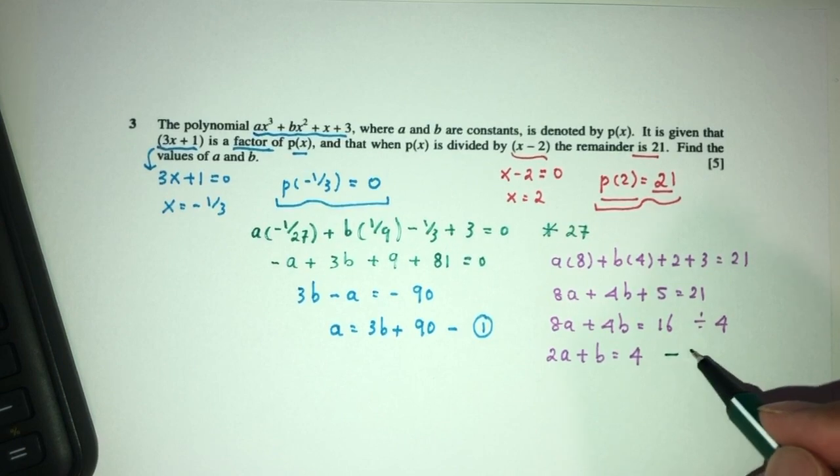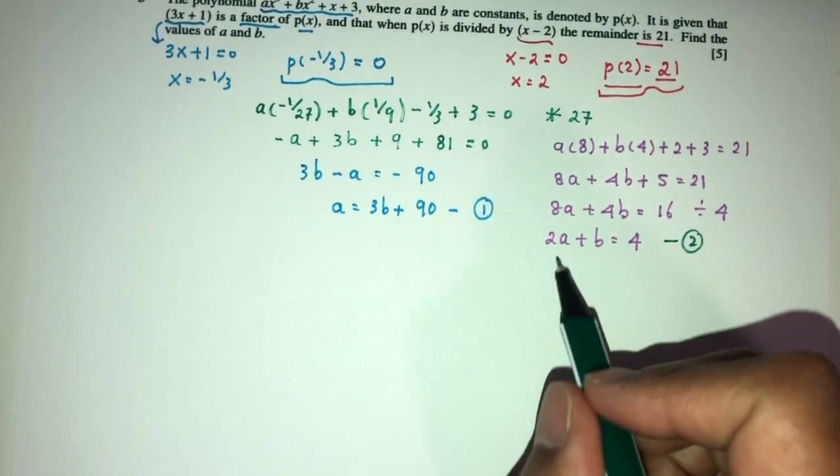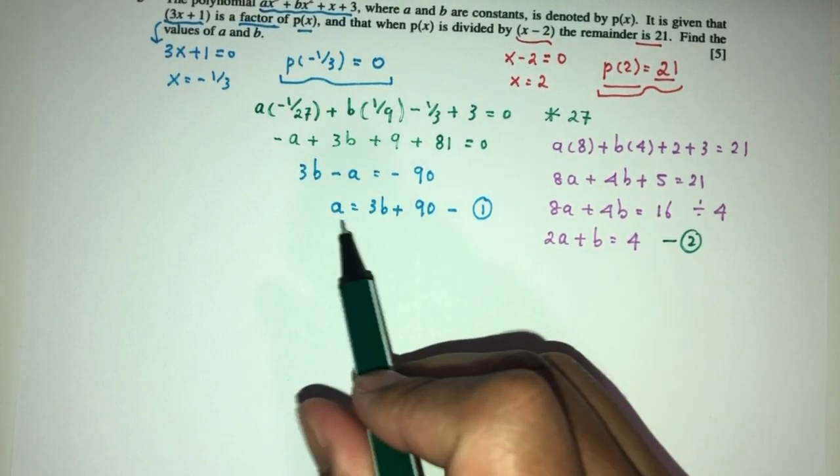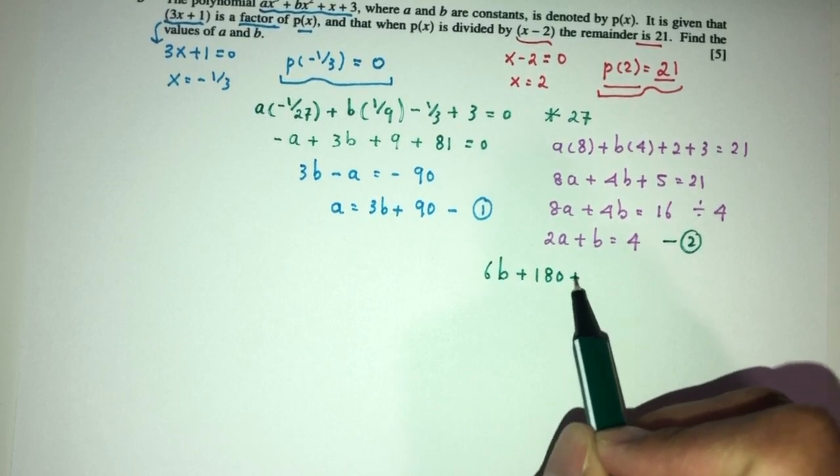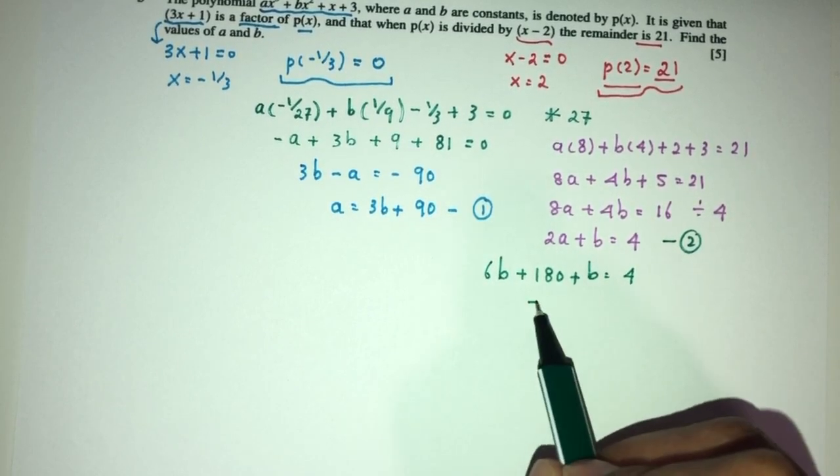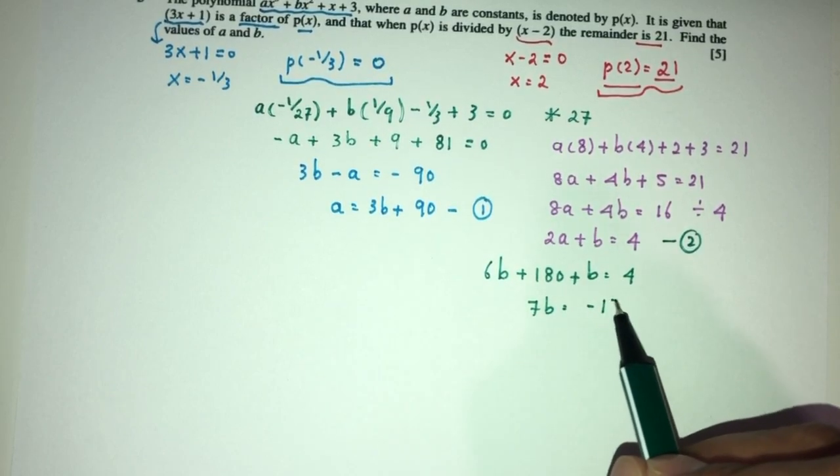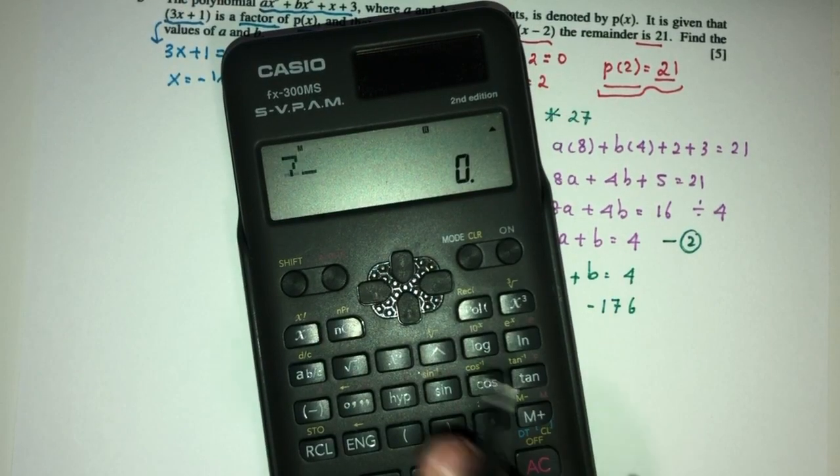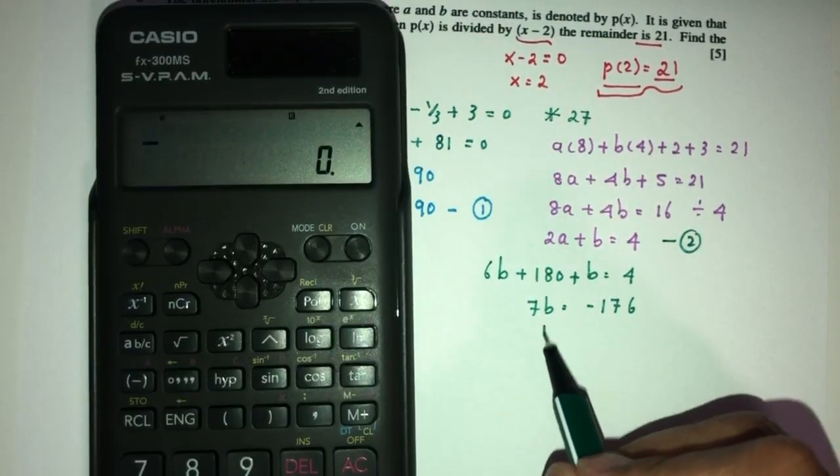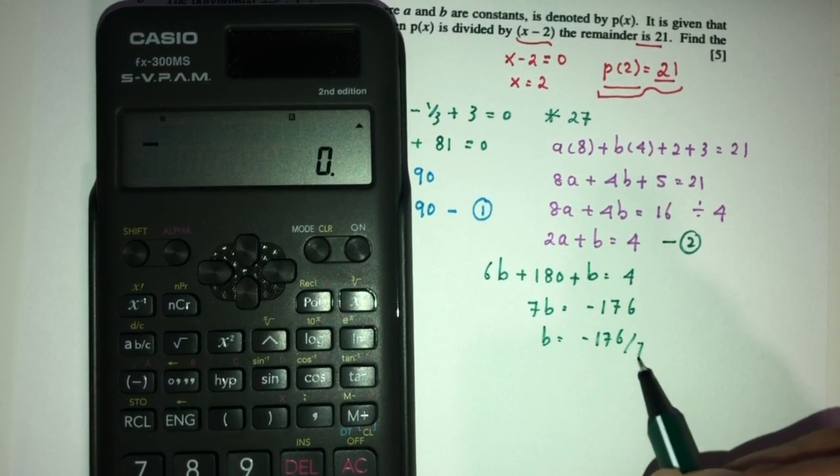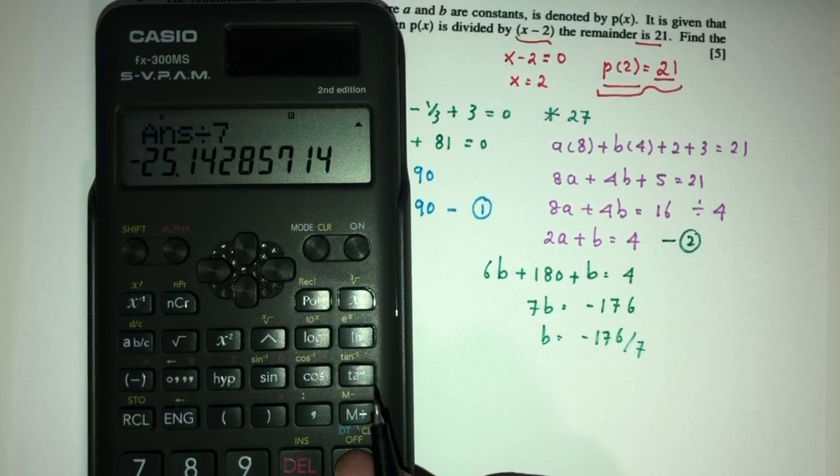We can use two equations to solve simultaneously to find a and b. Replace 2 times a: 6b + 180 + b = 4. That will be 7b = 4 - 176. The value is -25.14, but there should be a mistake somewhere. Usually it should not give me those values.